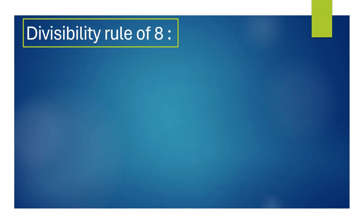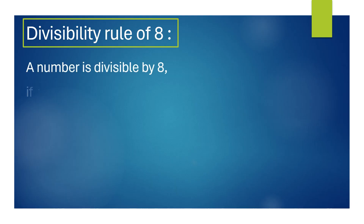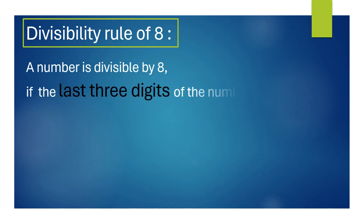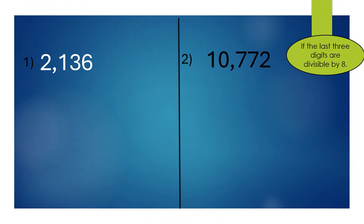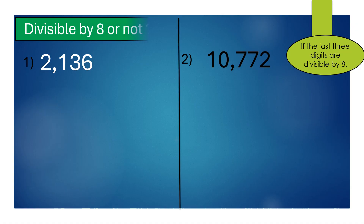Divisibility rule of 8: a number is divisible by 8 if the last 3 digits of the number are divisible by 8. Let's check whether these numbers are divisible by 8 or not.